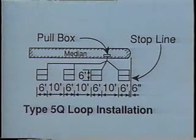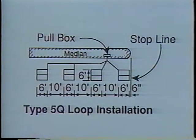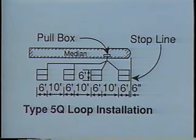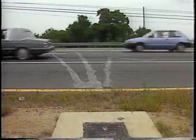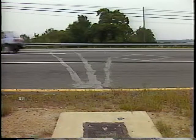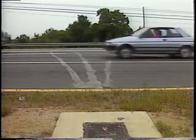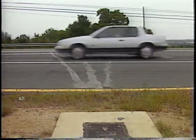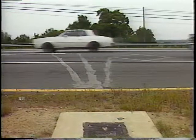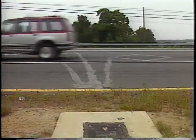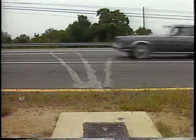A typical application might consist of one or more short loops near the stop line on the actuated approach of a low speed intersection. Another application requires spacing a number of short loops well back from the stop line; these loops act as extension detectors for higher speed approaches.